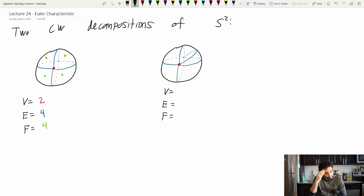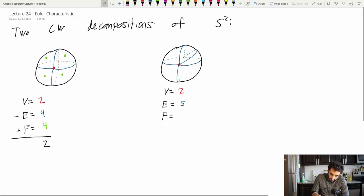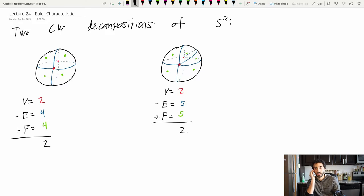Okay now let's do something a little strange. Let's look at V minus E plus F. Well that's 2 minus 4 plus 4. I get 2 here. On the right here I have another CW decomposition of S2 and here I again have two vertices. I have five edges this time and I have five faces. And so if I compute the same sum I'll again get two.